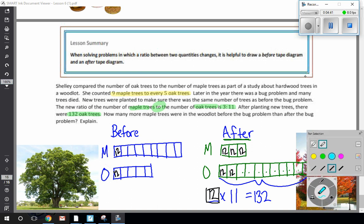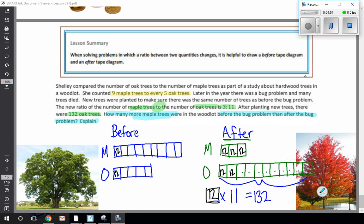So the final question says, how many more maple trees were in the wooded lot before the bug problem than after the bug problem? So I've got my maple trees before the bug problem and my maple trees after the bug problem. I can see that before the bug problem, my ratio was nine maple trees to every five. So I have nine here that we know are each worth twelve. So this chunk is equal to nine sets of twelve. We're going to have to find the totals here first. So nine times twelve, we have to know our basic facts. Nine times ten is ninety, nine times two is eighteen. So nine times twelve is one hundred eight.